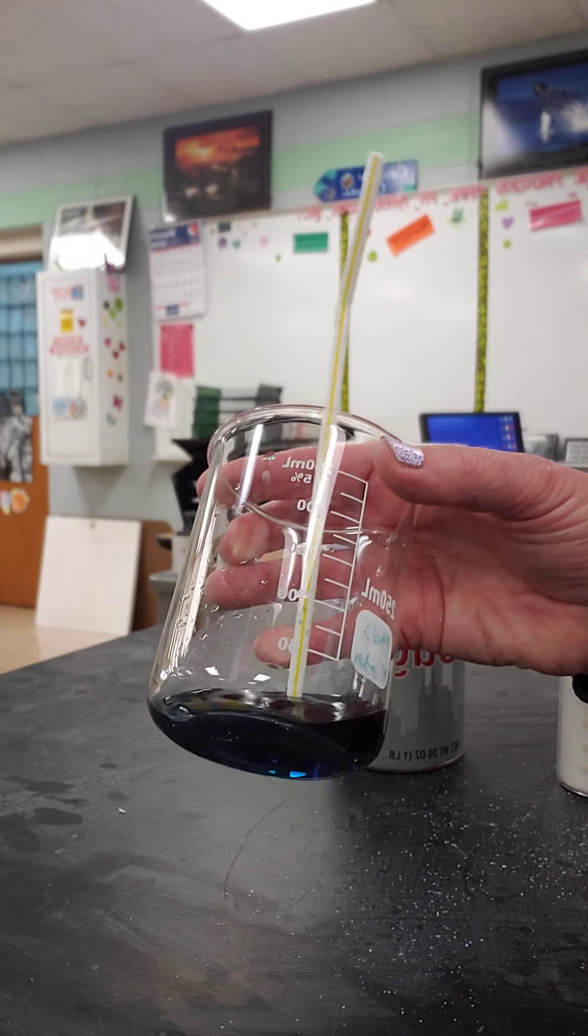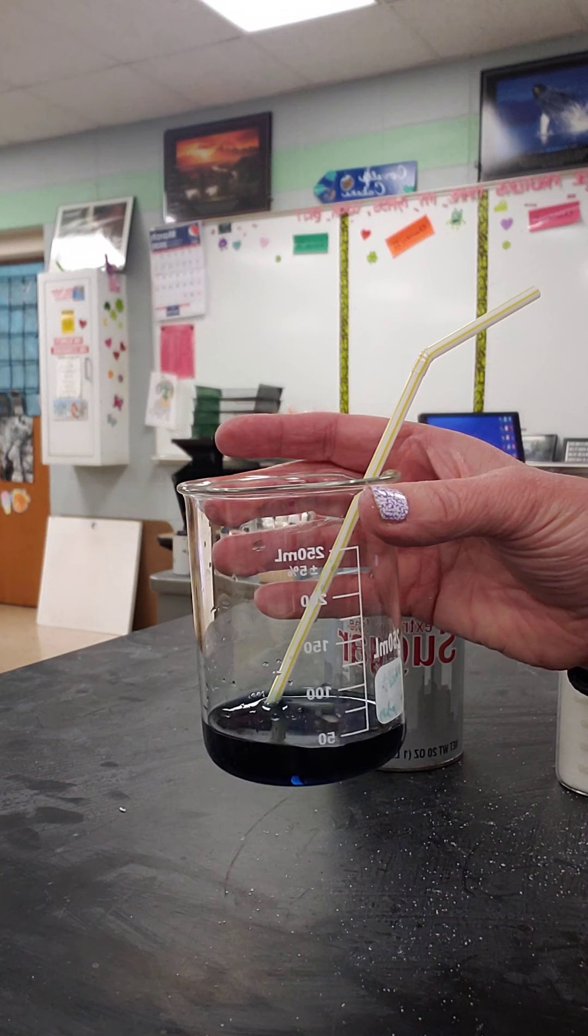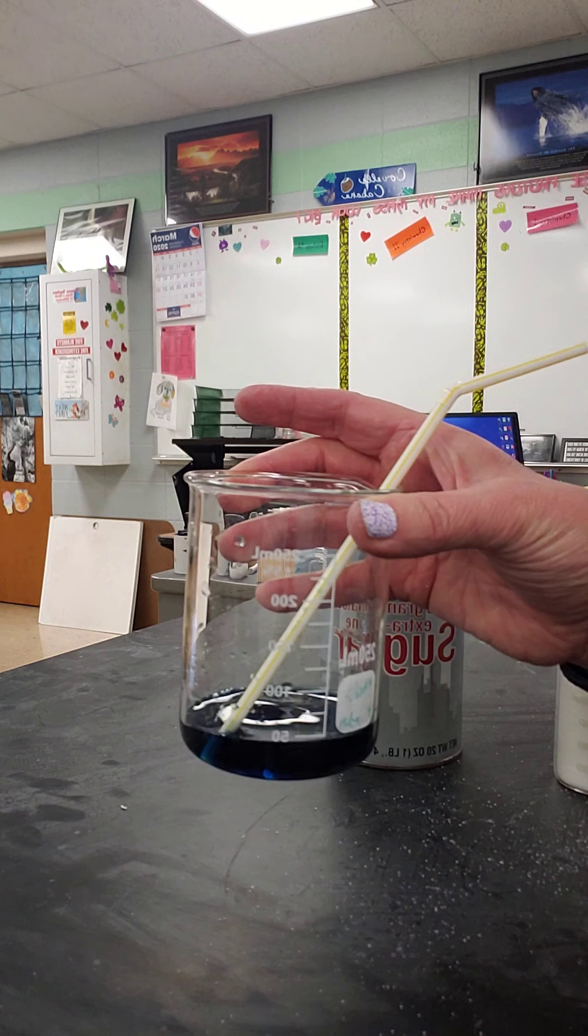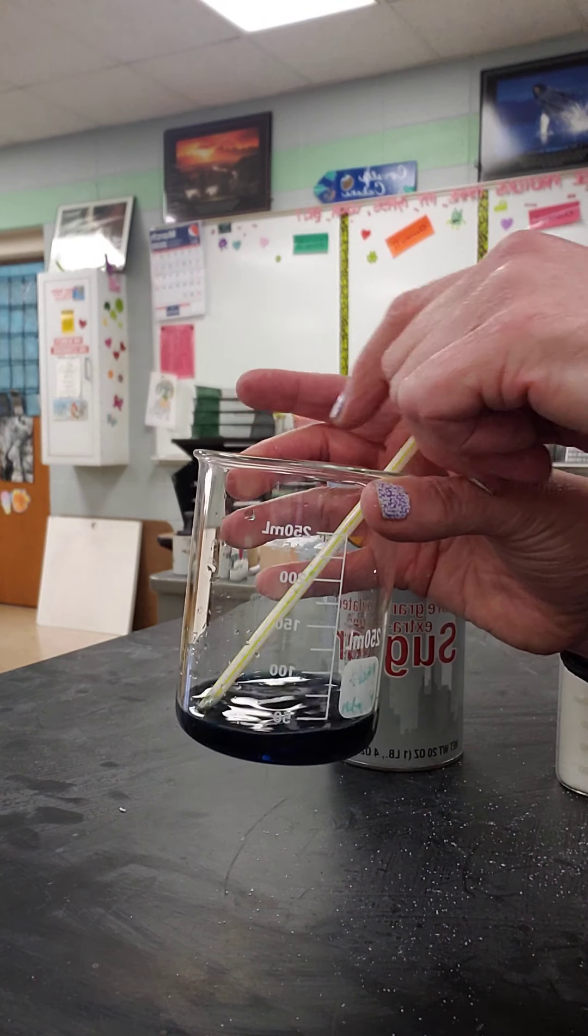BTB is an indicator. You can see it's blue. And in the presence of carbon dioxide, BTB will turn yellow. So if I blow through the straw and I breathe out carbon dioxide, this BTB should turn yellow. Let's see.